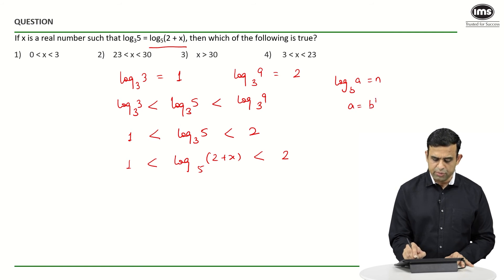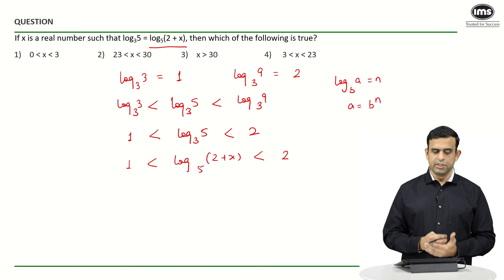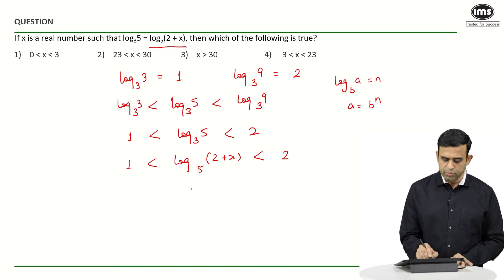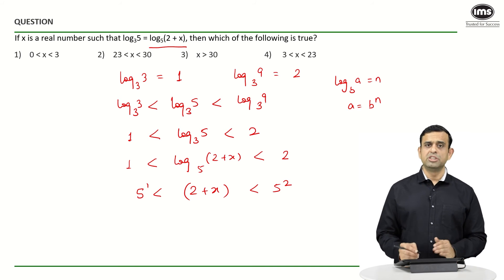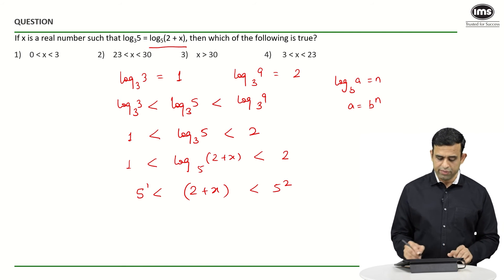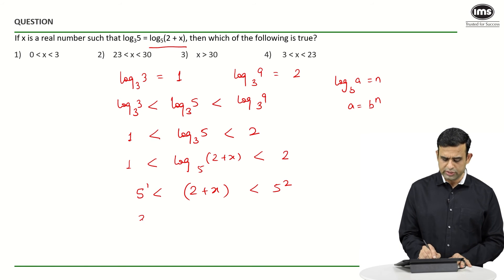The term (2 + x) should be between 5 raised to 1 and 5 raised to 2, which means between the numbers 5 and 25. If I subtract 2 on both sides, one will get 5 minus 2 as 3, and 25 minus 2 as 23. So the value of x will be in the interval 3 to 23.